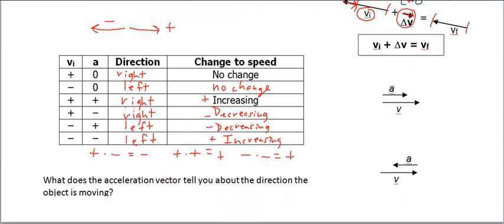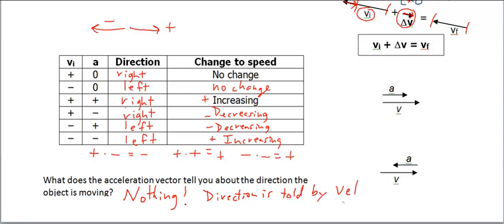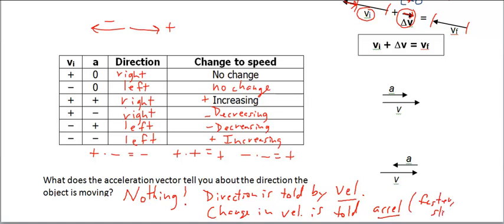So, what does the acceleration vector tell you about the direction the object is moving? It tells you absolutely nothing. The only thing that tells you the direction of motion is velocity. Direction is told by velocity. But change in direction — or change in velocity, getting faster or slower — is told by acceleration.